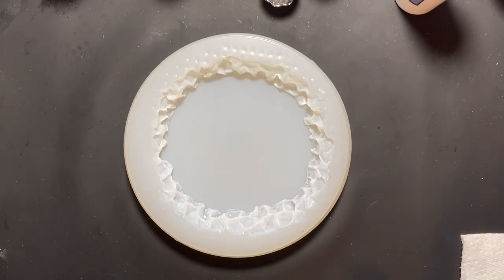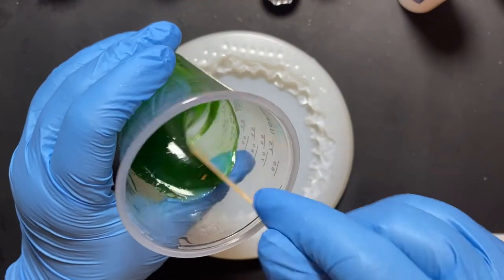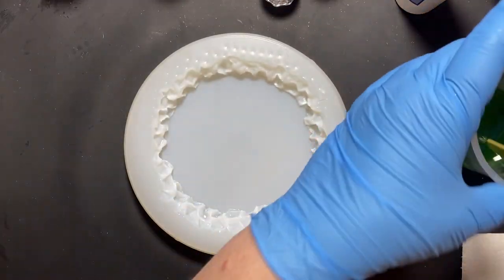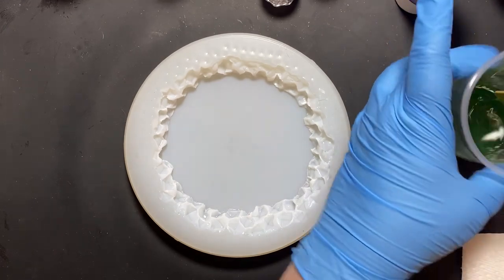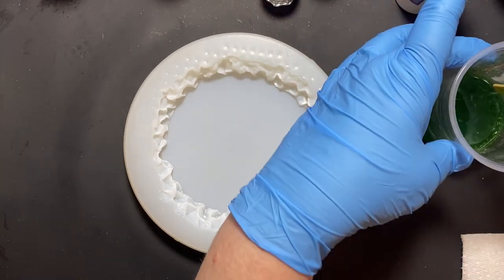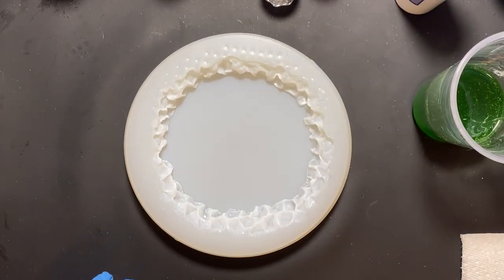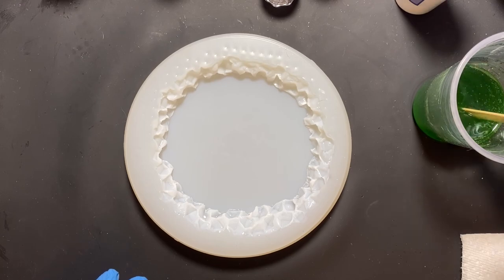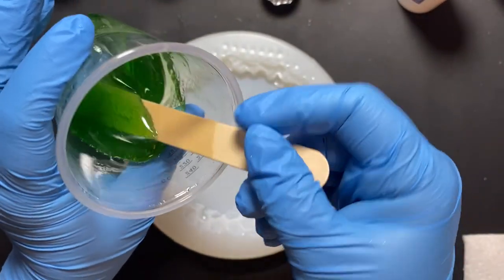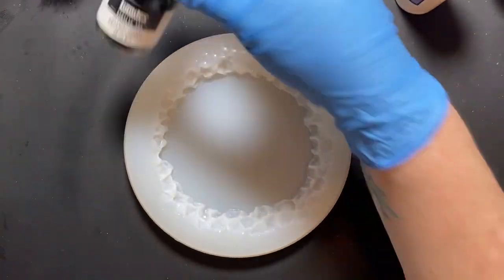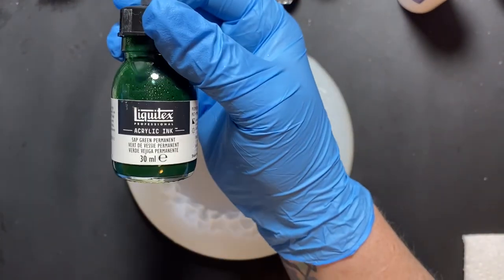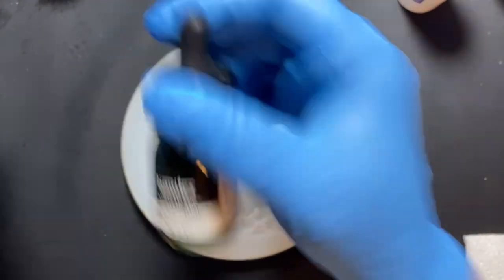So I mixed up 200 mils of Art Pro Resin. This is the remainder of my stuff. I think it's 75 mils of resin and I used three drops of Sap Green from Liquitex.